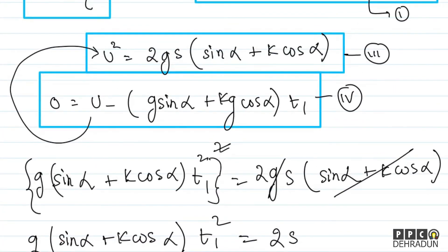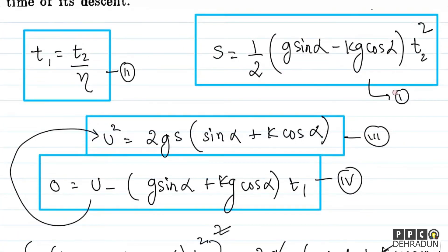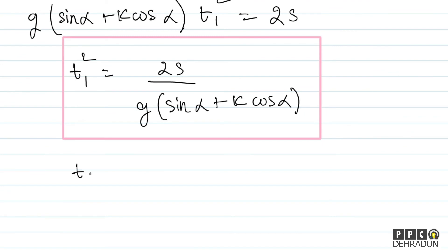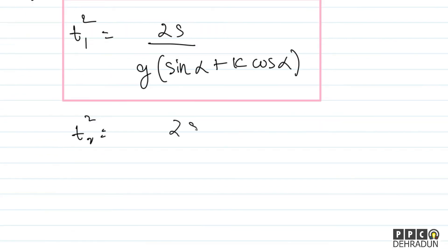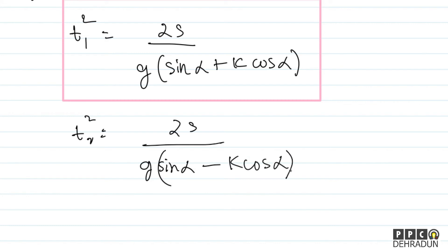Now for t2 squared — from the first equation for the downward journey: t2² = 2s / [g(sin alpha minus k cos alpha)].